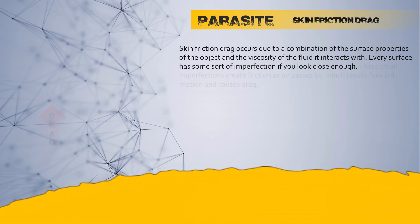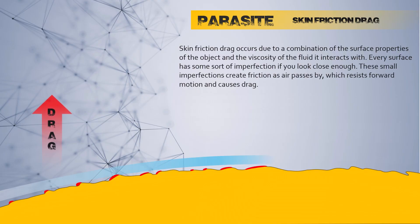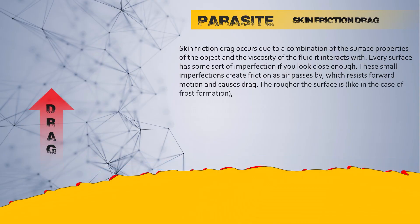These small imperfections create friction as air passes by, which resists forward motion and causes drag. The rougher the surface is — like in the case of frost formation — the more drag will be created.